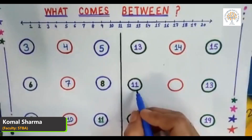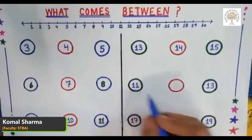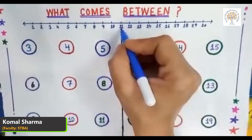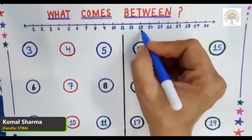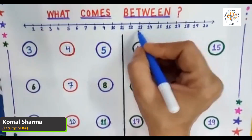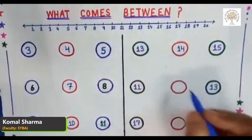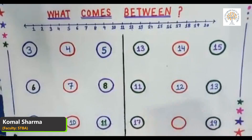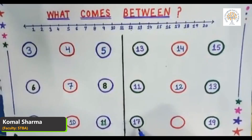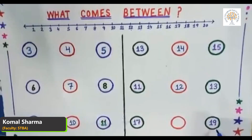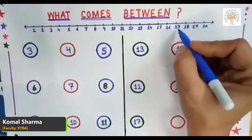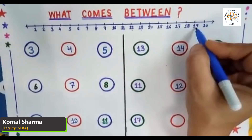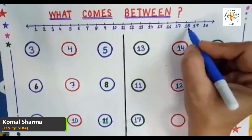Tell me what is the middle number of eleven and thirteen. Look at the number line — here is eleven and here is thirteen, and the between number is twelve. And what is the between number of seventeen and nineteen? Look at the number line — here is seventeen and nineteen, and the middle number is eighteen.